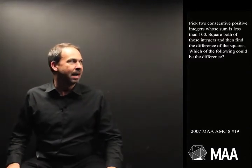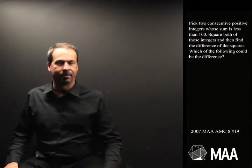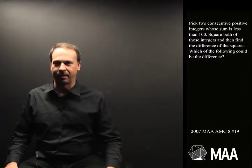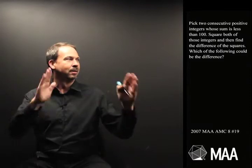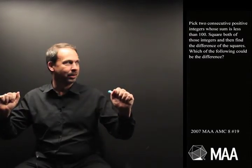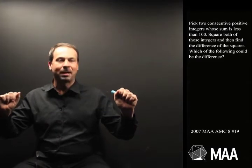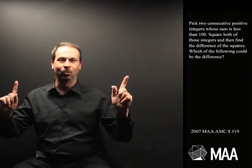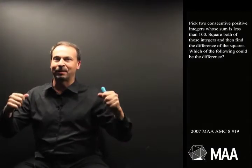Square both of those integers and then find the difference of the squares. Alright, so if I chose 39 and 40, square 39, get some number, 40, square it, get some number, find the two squares, bingo. Which of the following could be the difference? So I want to take those two squares and subtract them and get the difference.